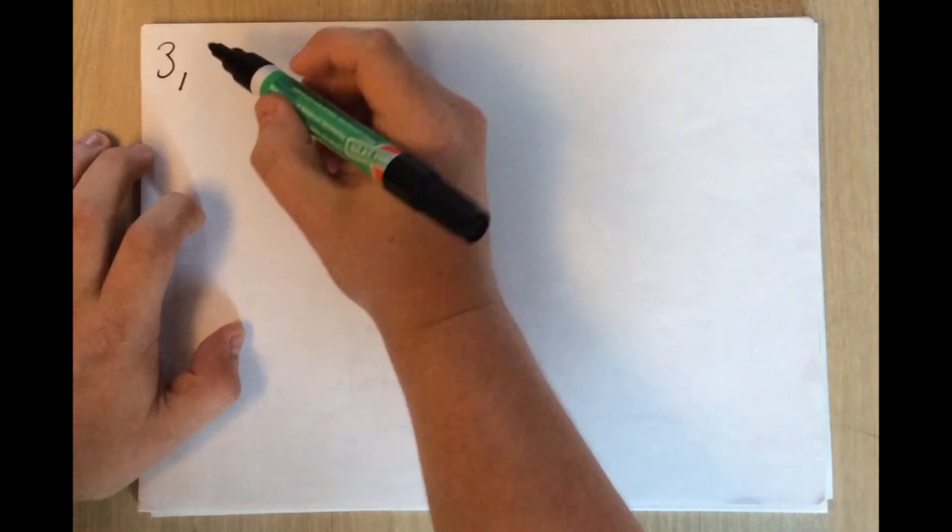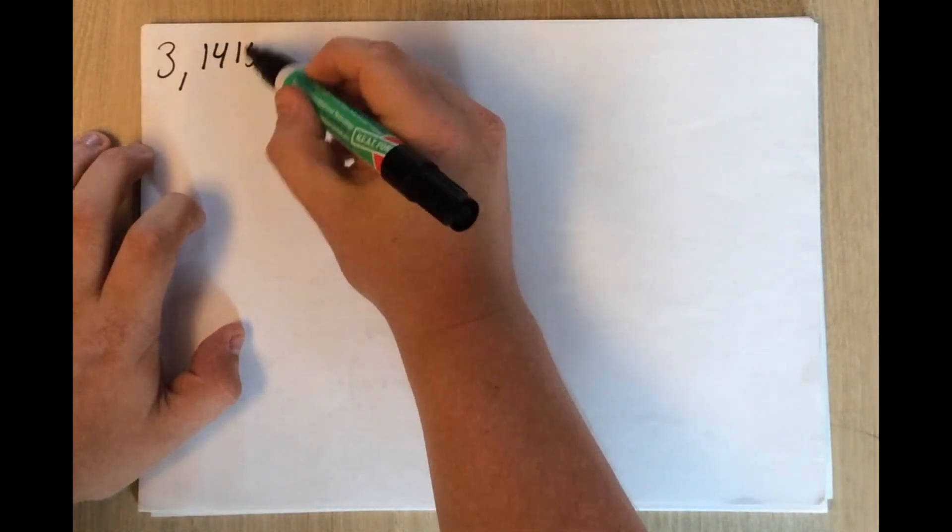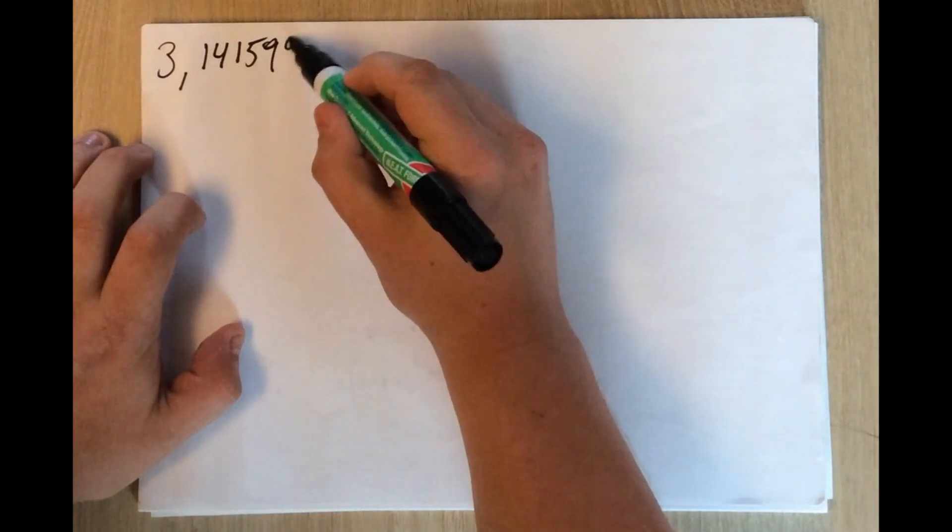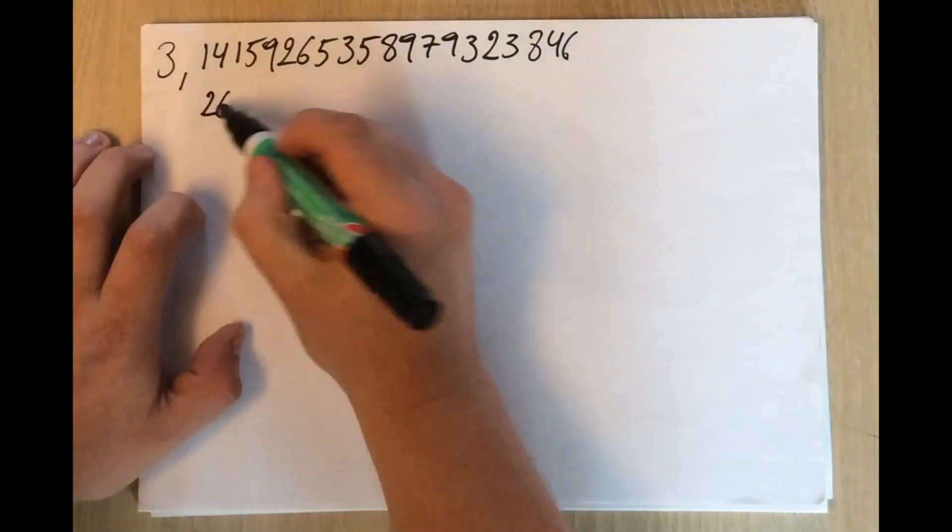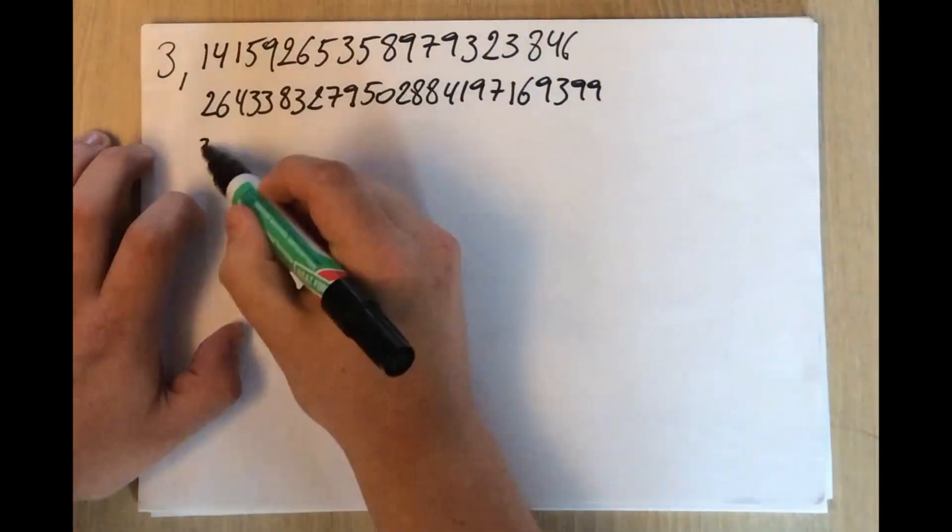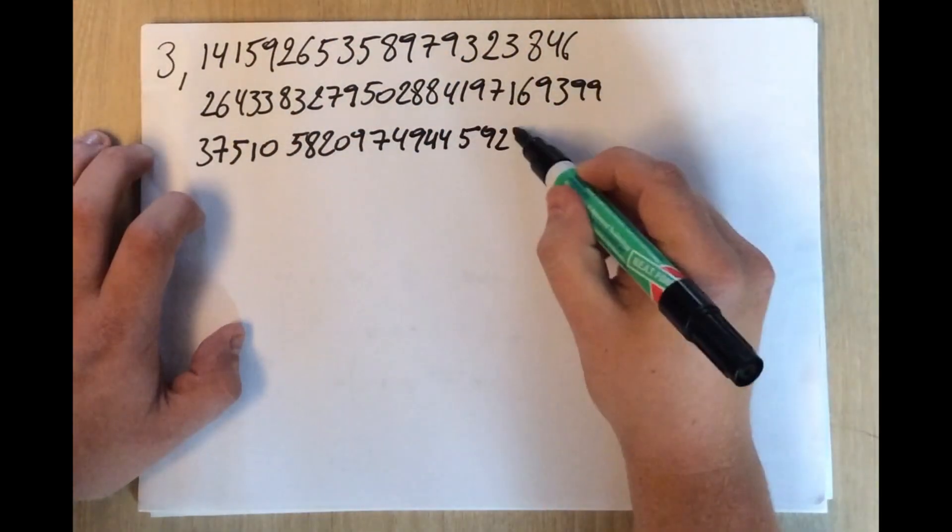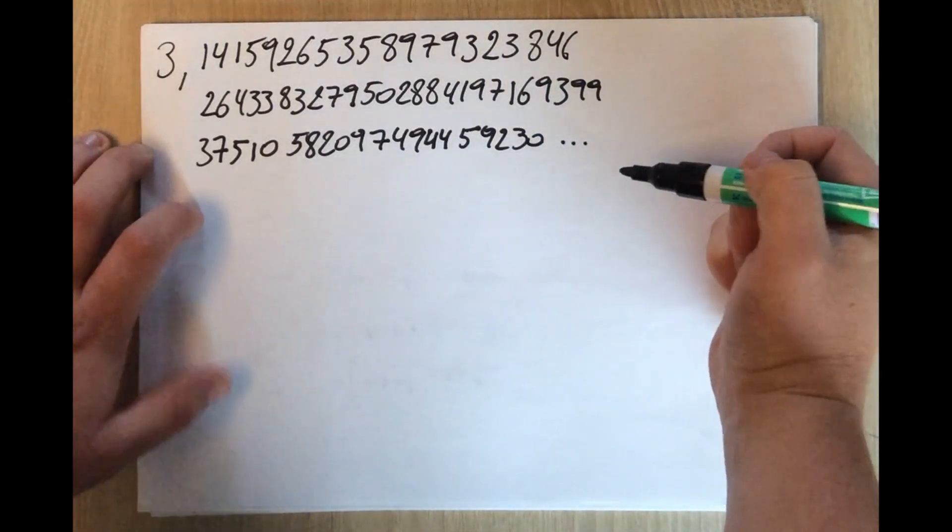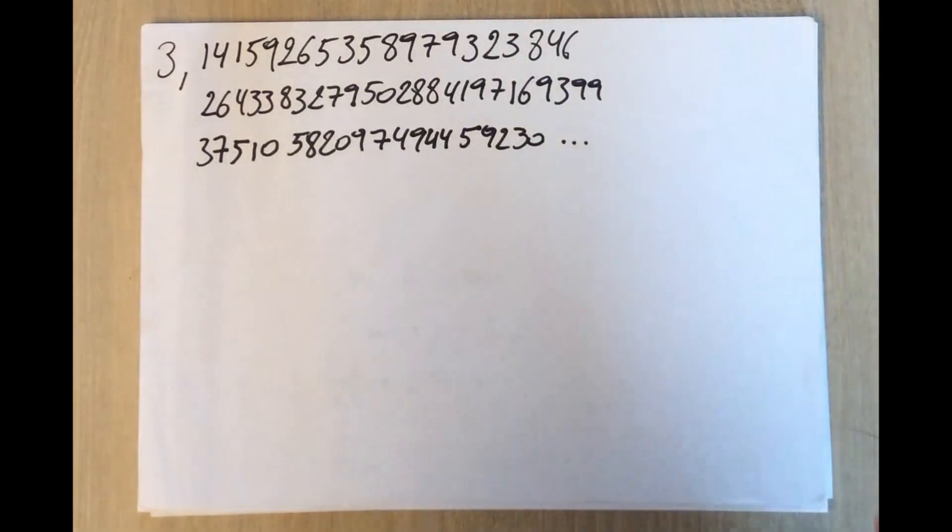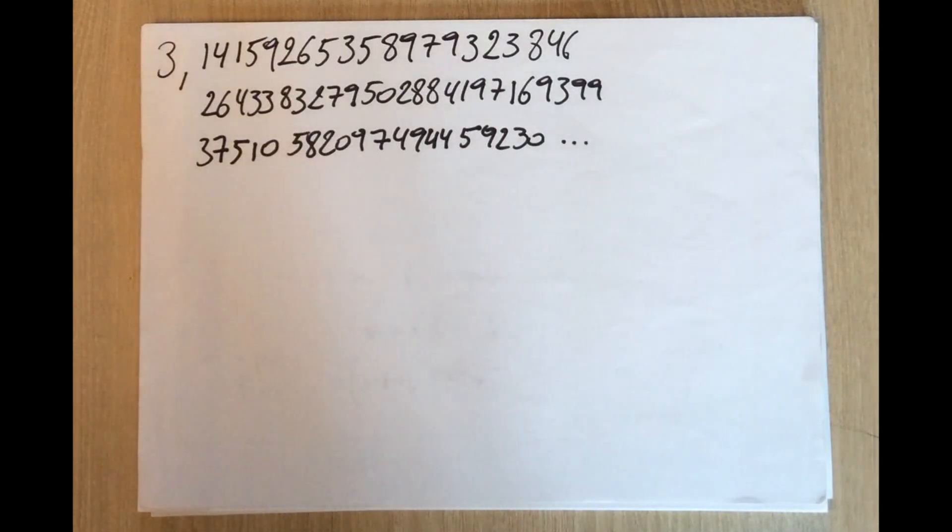So it is 3.14159 and so on. I've only noted a couple of digits, of course it goes on forever, but those are enough to make my point. I'm interested in numbers appearing in the decimal expansion of pi. I'm ignoring the three point. I'm starting to look at the digits after the decimal point. The real decimal expansion of pi.